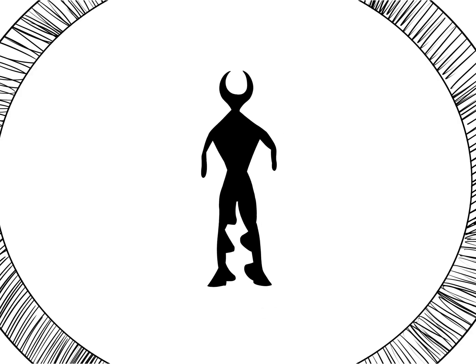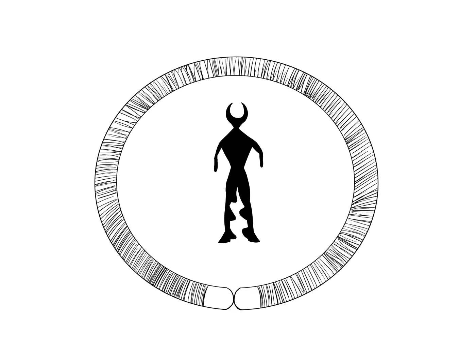The genes are the instructions that tell our bodies how to grow and develop. So when a ring chromosome is formed, it may change how those genes work. When a chromosome 20 forms a ring, the result is R20.